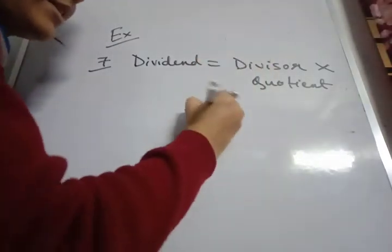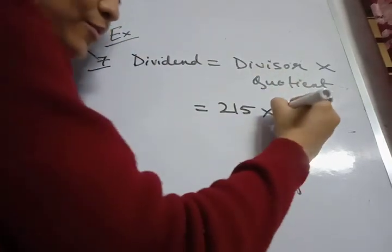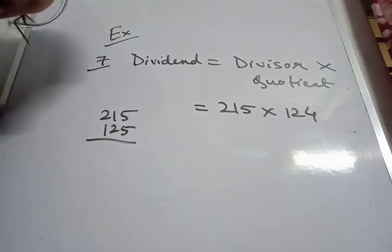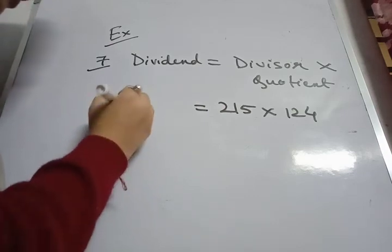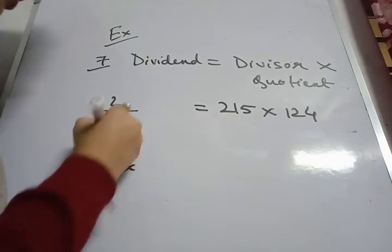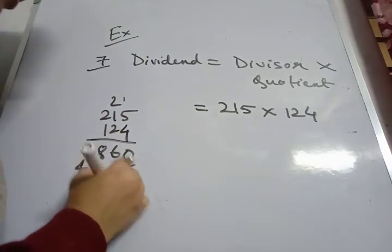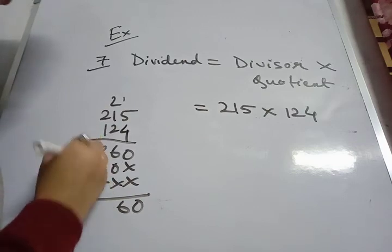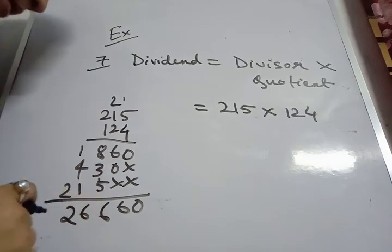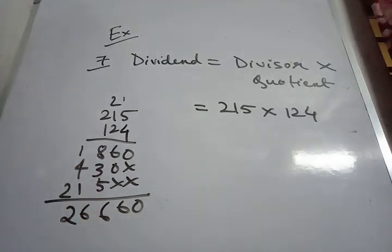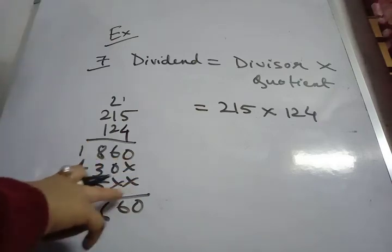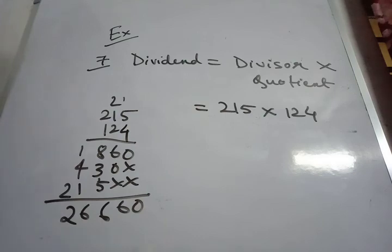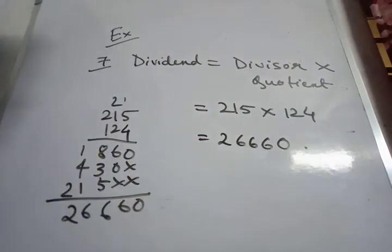So here we have to find out the dividend. Divisor is given as 215 and quotient is given as 124. Here also we have to multiply and then only we have to give the product. So 215 into 124. 5 times 4 is 20, 4 times 1 is 4, 5, 6, 2 times 4 is 8. 5 times 2 is 10, 2 times 1 is 2, 3, 2 times 2 is 4. 5 times 1 is 5, 1. Here 2. 6. This one is 8. 8 and 16. 5, 6. Is it okay? 2, 2, 6, 6, 0. Let me check once. 1 times 5, 1, 2, 1, 1 times 1 is 1. Yeah. 2, 6, 6, 0. This one.